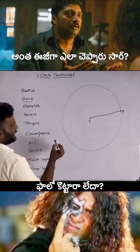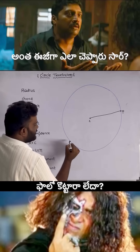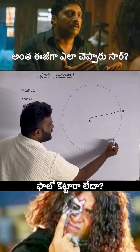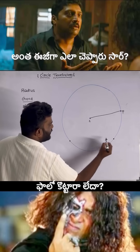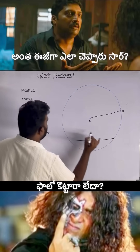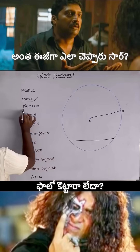Chord: it is a line segment which has two endpoints on the circle. Joining these two points is a line segment that is called a chord.